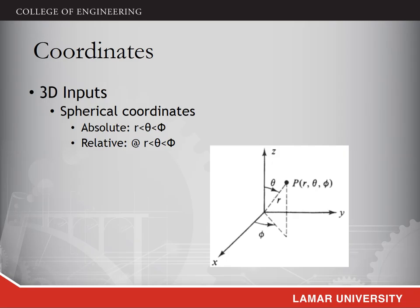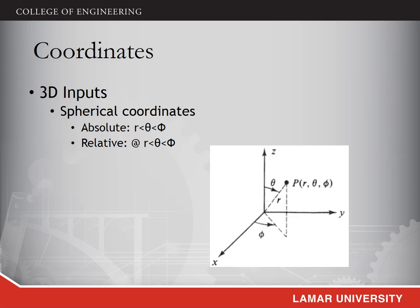The second type is the spherical coordinate system. In this system, the location of one point is defined by its distance to the origin, r, its angle to the z-axis, theta, and the angle between the projected line and the positive x-axis, phi. It has both absolute and relative coordinates. The format for the absolute coordinate is (r<theta<phi), and you can add the @ symbol in front to define the relative coordinate.